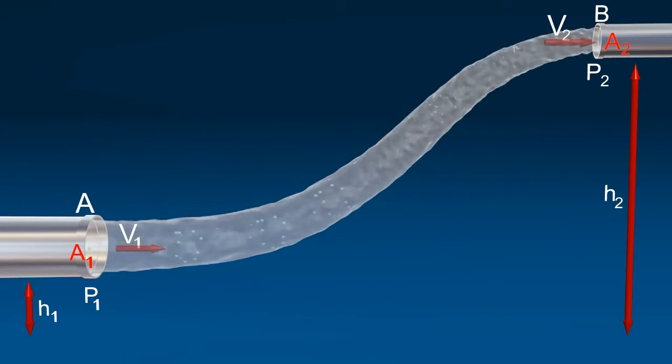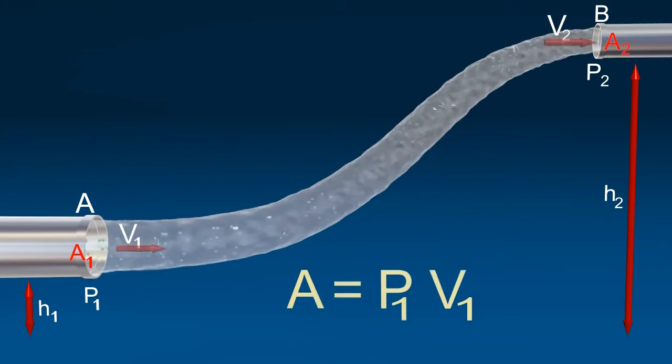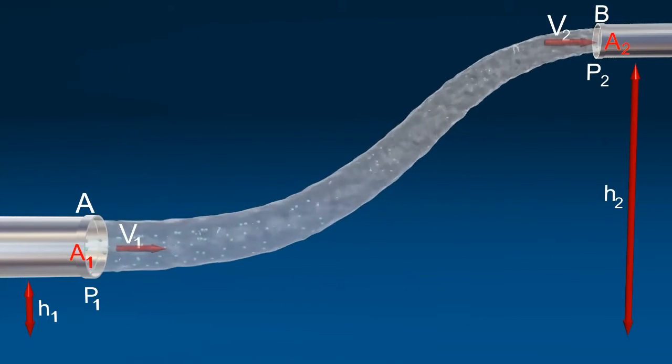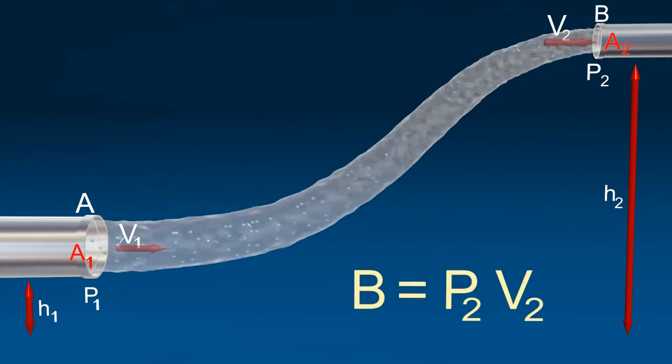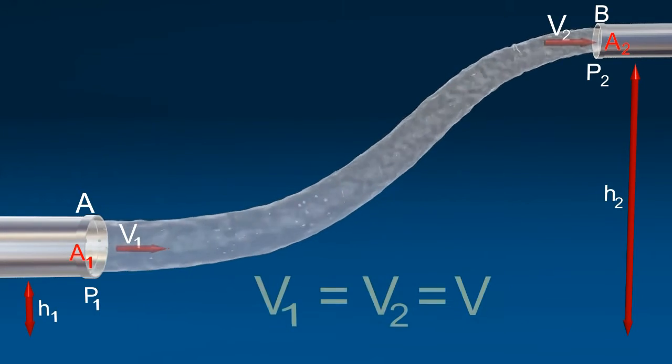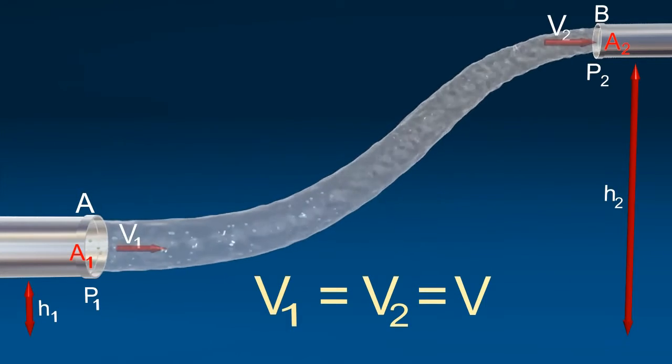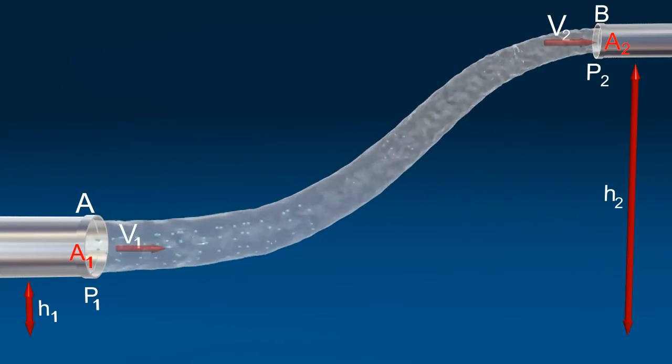The work done per second on the liquid at section A and at section B. V1 equals V2 equals V, equation of continuity.